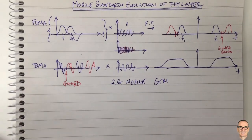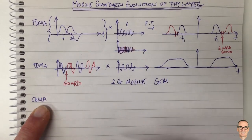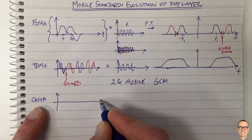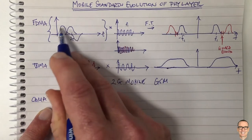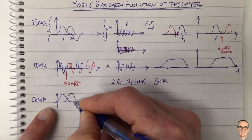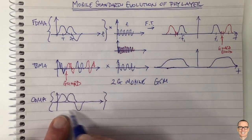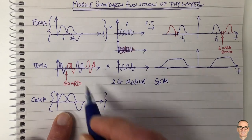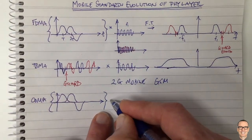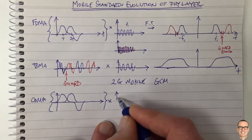Another way of doing multiple access is CDMA — code division multiple access. Here we have our signals at roughly FDMA timescales; we're not sending the symbols so fast. For each user, we multiply in CDMA by a digital code. Each user sends at this kind of rate, and we apply a different code per user.